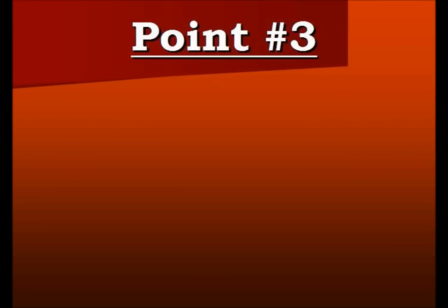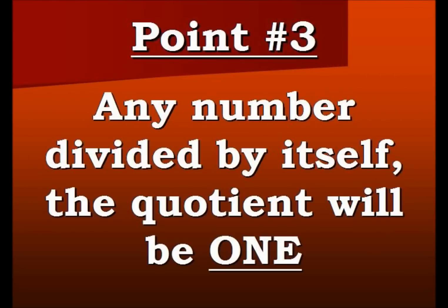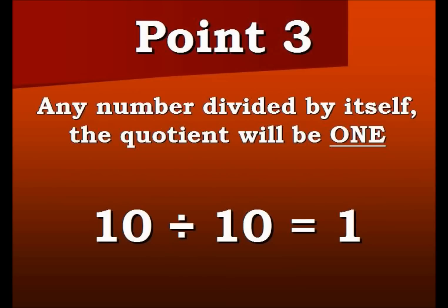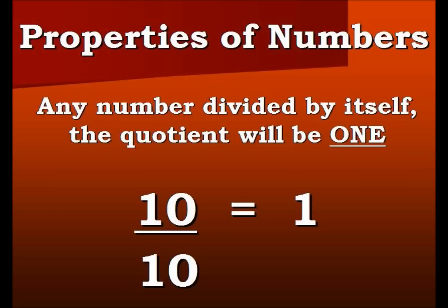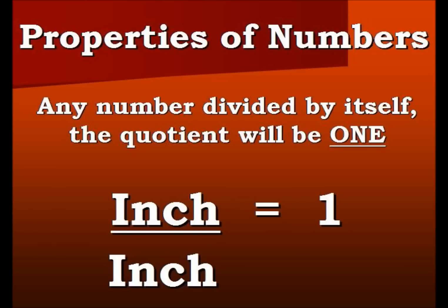Now the third point: any number divided by itself, the quotient will be 1. For example, 10 divided by 10 equals 1. Using the fraction bar to represent division, 10 over 10 equals 1. And so dividing 1 inch by another inch equals 1.